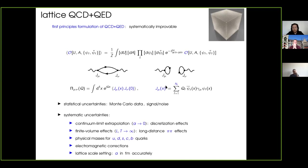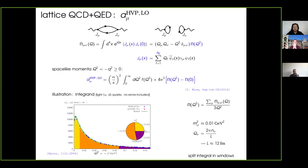You have to sum over all quark flavors, which implies including up, down, strange, charm, and bottom quarks in your simulations. If you aim at 0.6% error — the dispersive approach error — you also need to take into account the fact that up and down quarks have different masses and that you have electromagnetic corrections. Moreover, you need to know the lattice spacing of your lattice sufficiently accurately. All these are challenges for lattice computation.